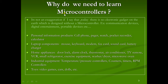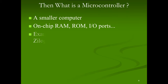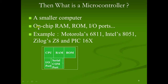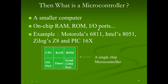So what is a microcontroller? A microcontroller is a small computer. It has on-chip RAM (Random Access Memory), ROM (Read Only Memory), and I/O ports — all embedded on a single chip. For example, the Motorola 6811 is one such microcontroller.